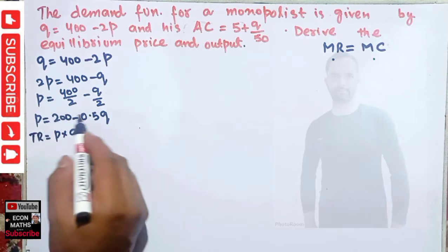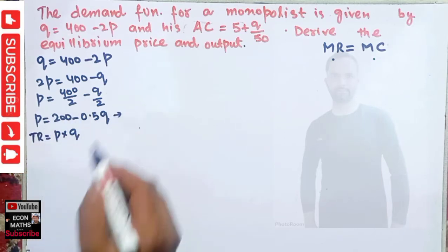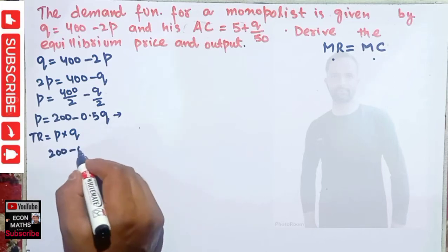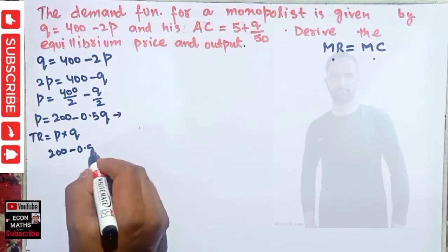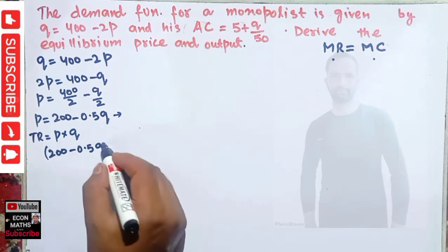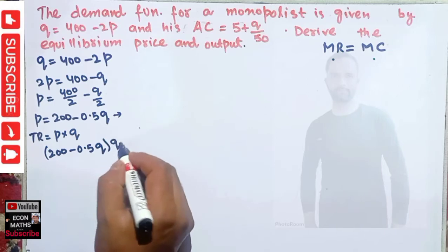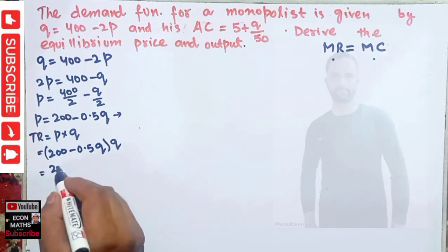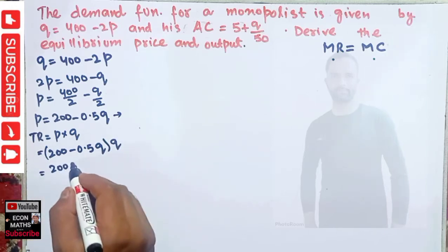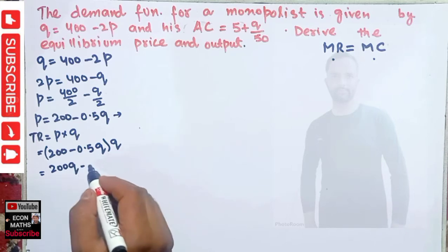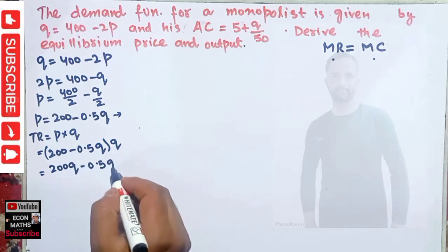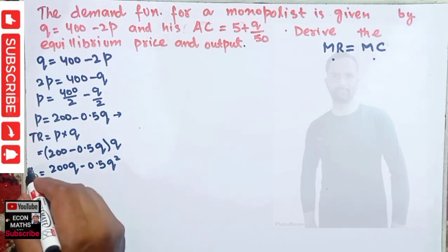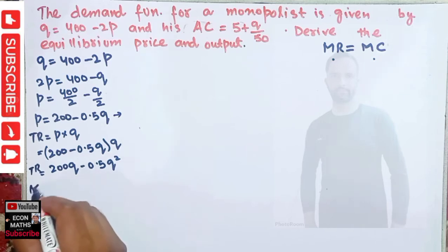Total revenue is equal to price times quantity. Price is 200 − 0.5Q, so we multiply by Q to get total revenue = 200Q − 0.5Q².